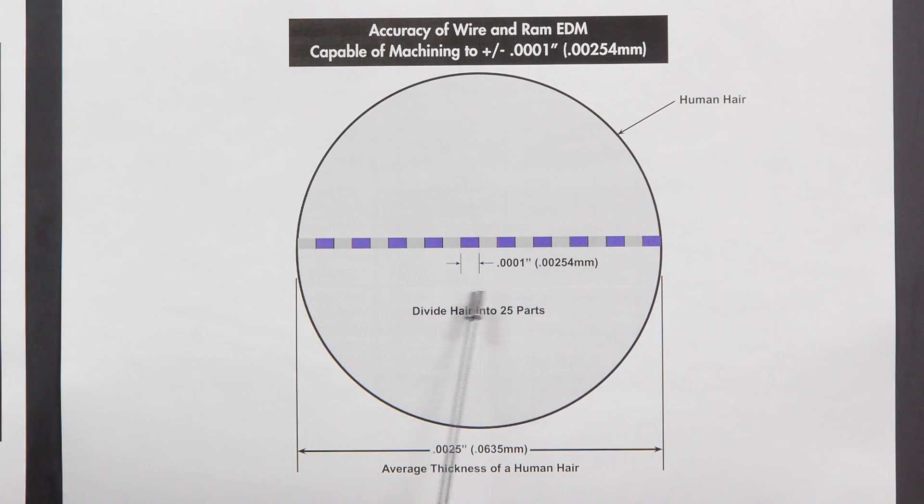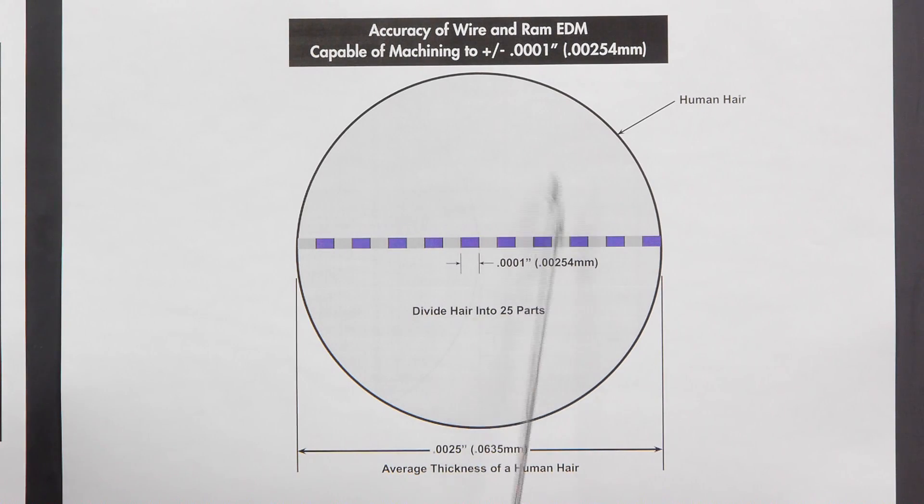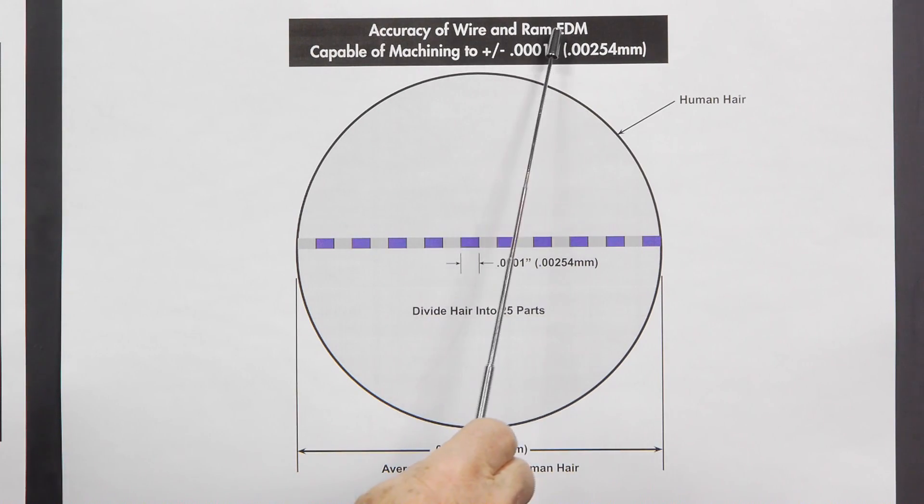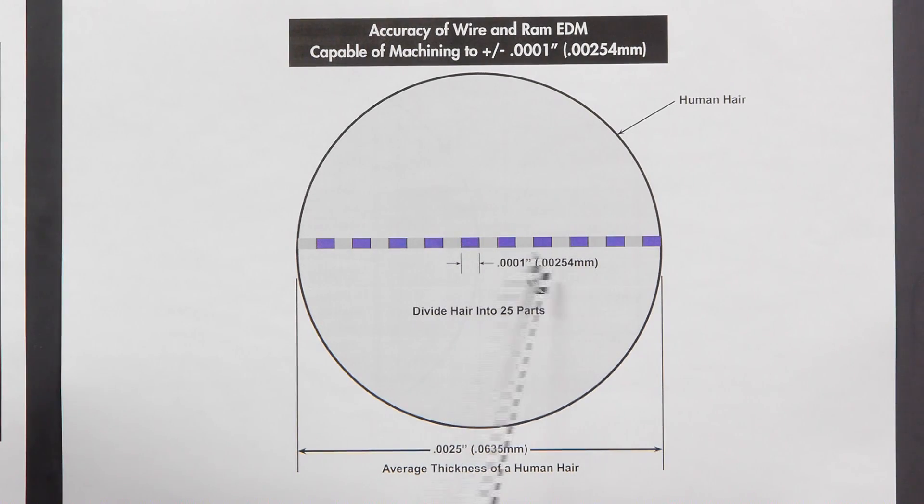Now, a tenth, you divide this hair into 25 parts to get one-tenth. And this gives you the accuracy of wire and RAM EDM capable of machining plus or minus one-tenth, one little section of a thousand.